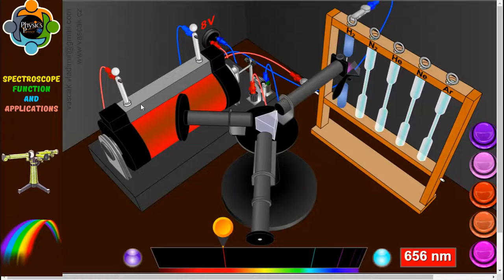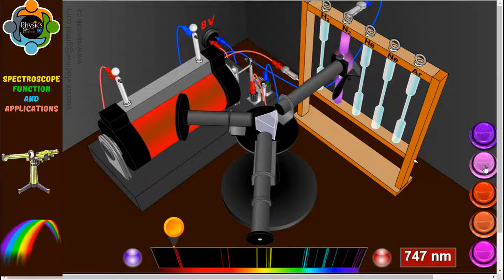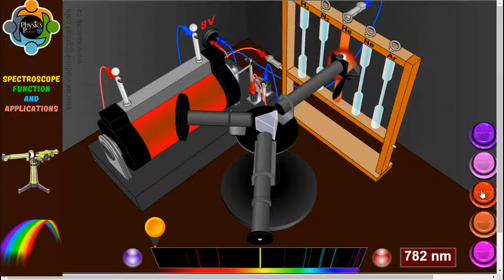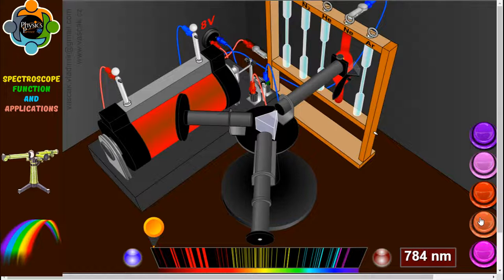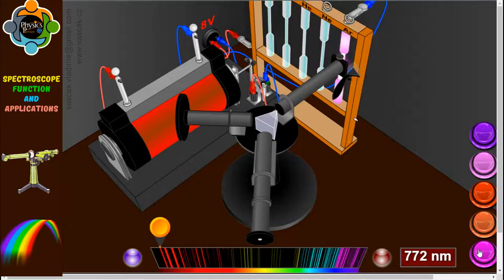Let's have an example. Here you can see the sample of hydrogen, and the wavelength observed from hydrogen is 656 nanometers. In case of nitrogen, it is 747 nanometers, and in case of helium it is 782 nanometers. Similarly, neon will give you 784 nanometers and argon will give us 772 nanometers.